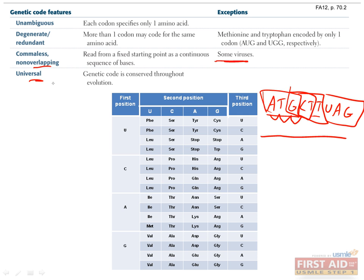The last feature is that the code is universal. This means that in all species, this code is the same. If a codon codes for glutamine in one species, it will also code for glutamine in all other species.